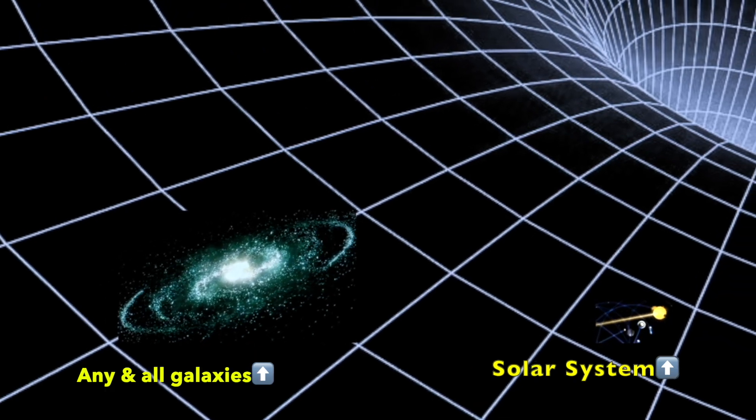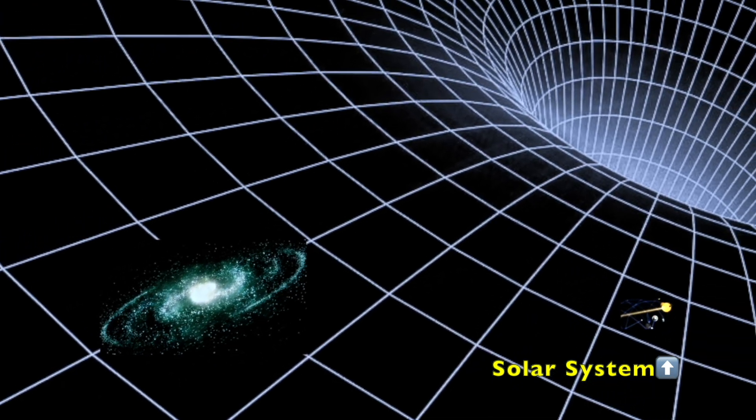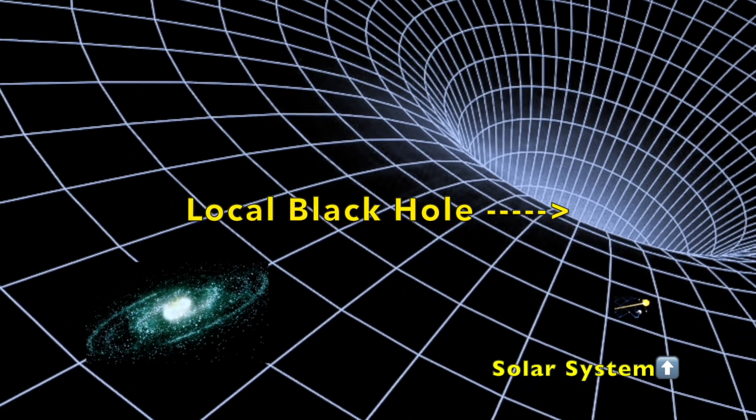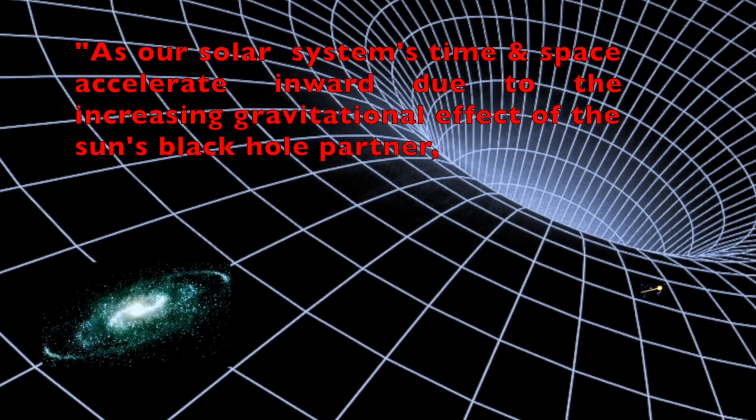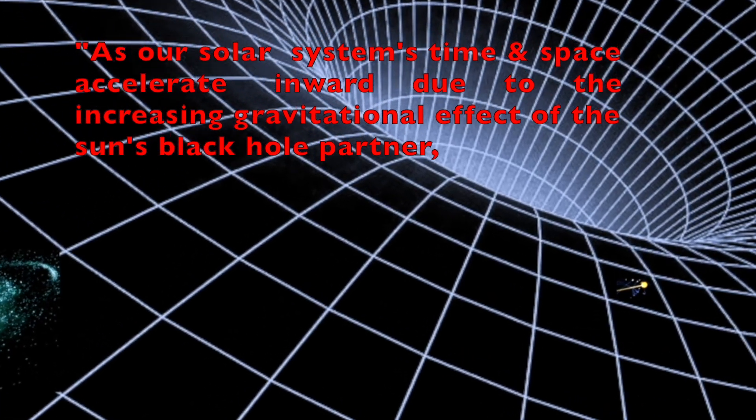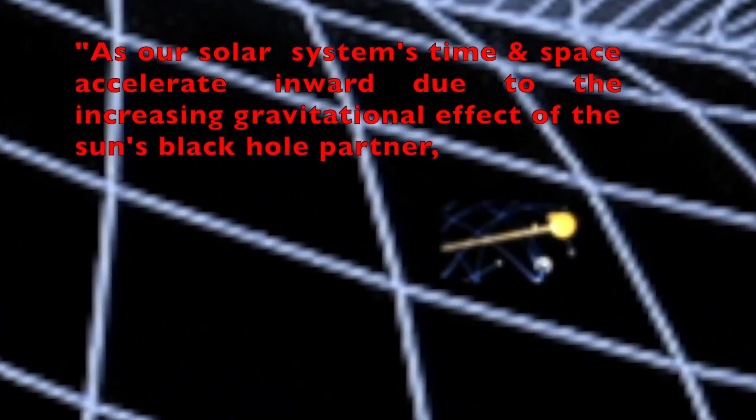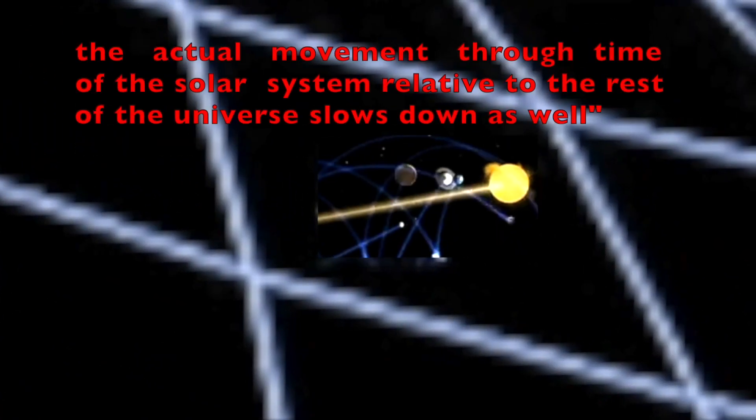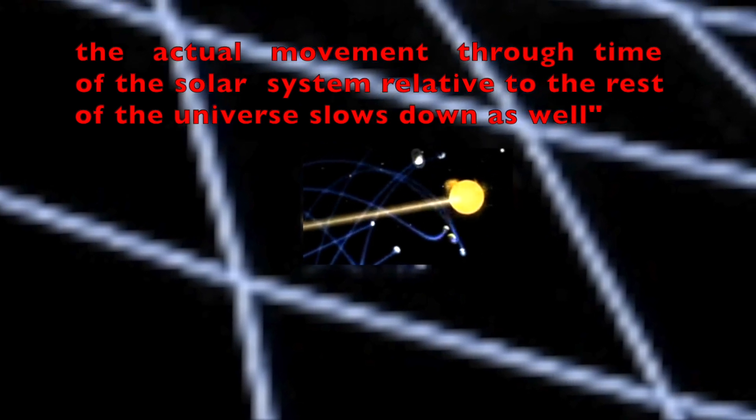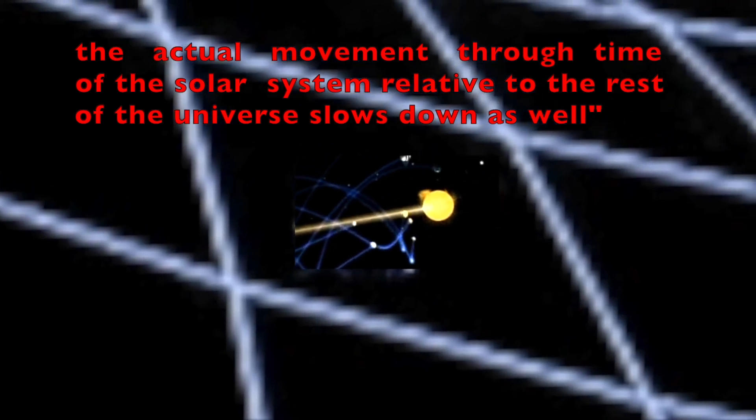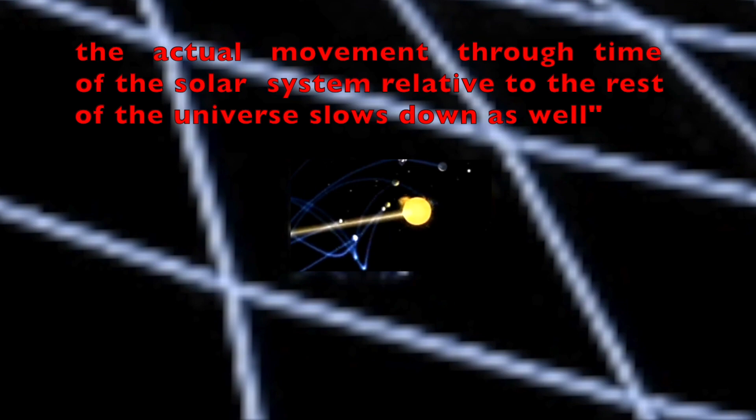You see, the solar system is falling inward as it approaches this local black hole. And as our solar system's time and space accelerate inward due to the increasing gravitational effect of the Sun's black hole partner, the actual movement through time of the solar system relative to the rest of the universe slows down as well.